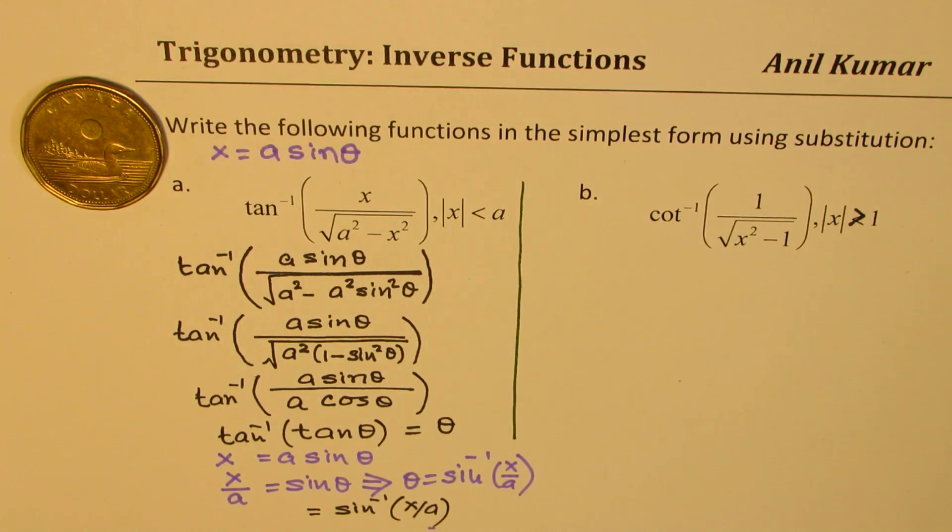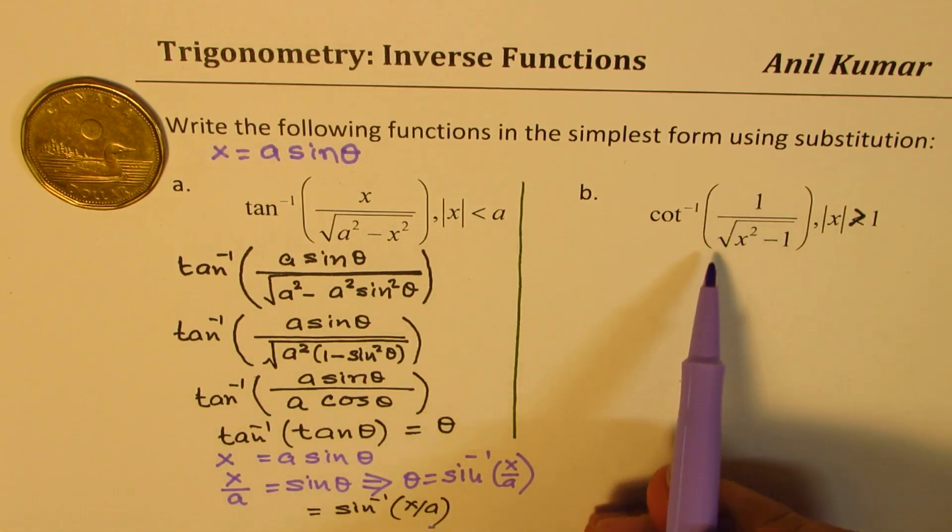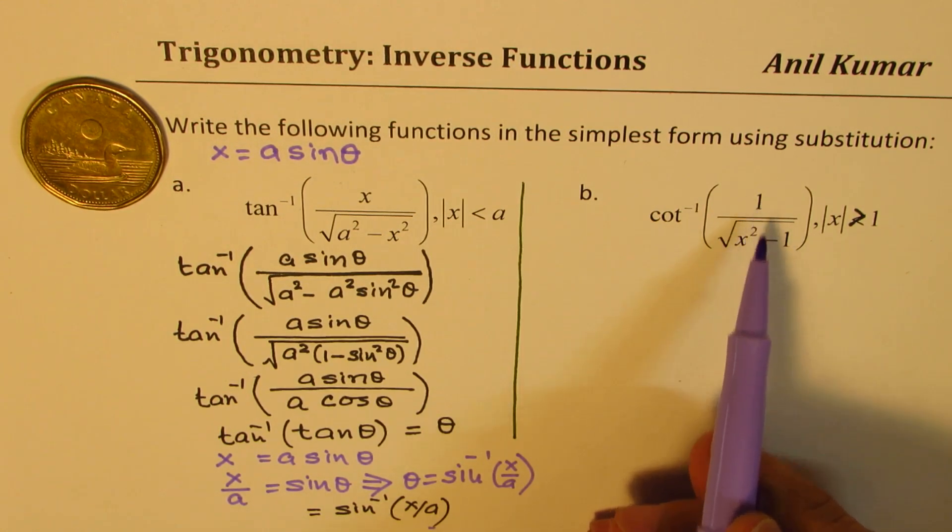Now, I would like you to pause the video, try the second question yourself and then look into my suggestions. Now, here we want cot. I could get cot if I have 1 over tan. Now, that reminds you what x could be.